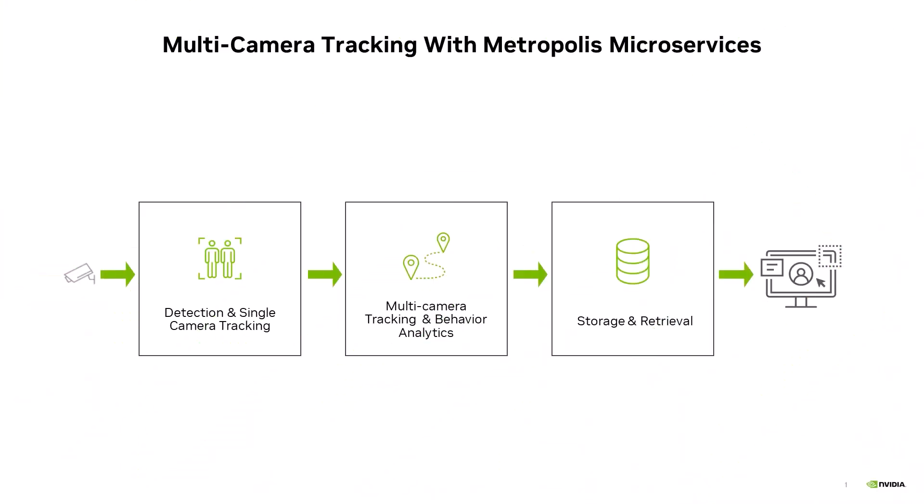With the reference application for multi-camera tracking from Metropolis Microservices, we track and re-identify objects anonymously across cameras. The multi-camera tracking application can be broken down into three key components.